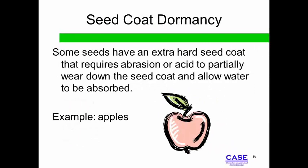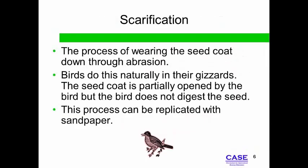Seed Coat Dormancy is a natural mechanism plants use to delay germination of seed until the seed has been carried away from the parent plant, or the parent plant dies, to prevent competition with offspring for essential growth factors. Scarification occurs in nature, and humans can replicate these processes with mechanical and chemical processes. Can you think of a reason why humans might want to do this?